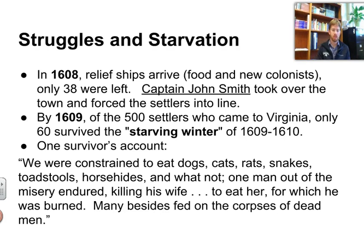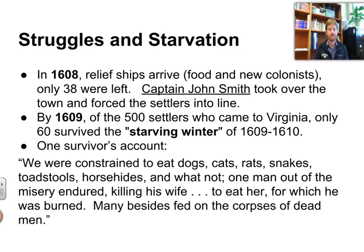Here is a primary source account from a survivor: 'We were constrained to eat dogs, cats, rats, snakes, toadstools, horse hides, and whatnot. One man out of the misery endured killing his wife to eat her, for which he was burned. Many besides fed on the corpses of dead men.' So people were cannibalizing, and if caught, they were terribly punished — this man was burned. It was not a good time to be in Jamestown.